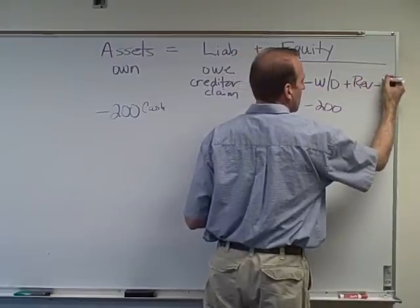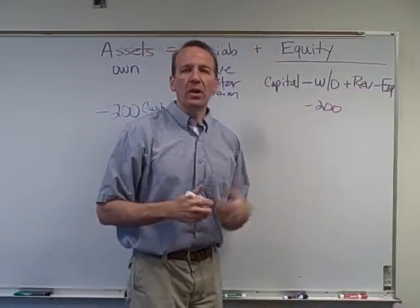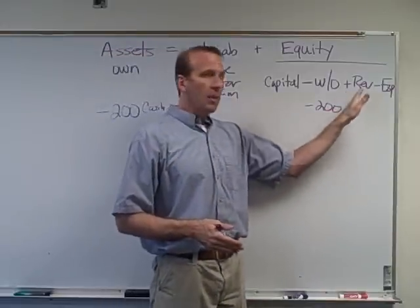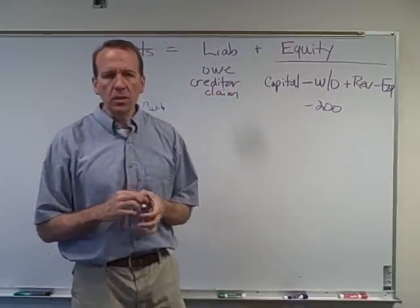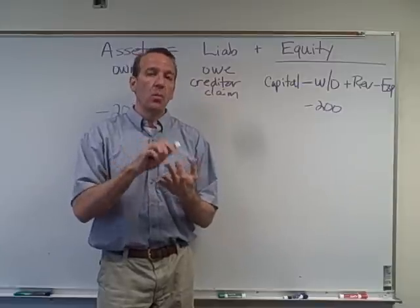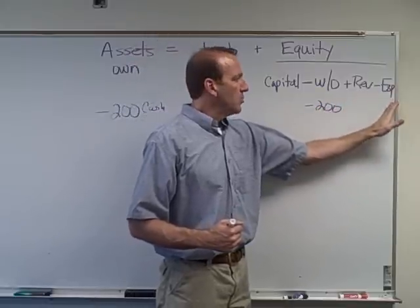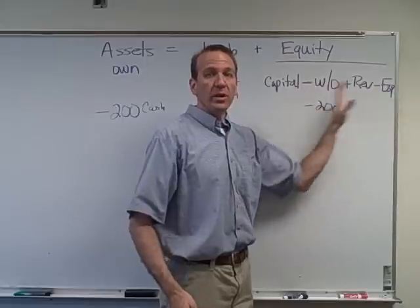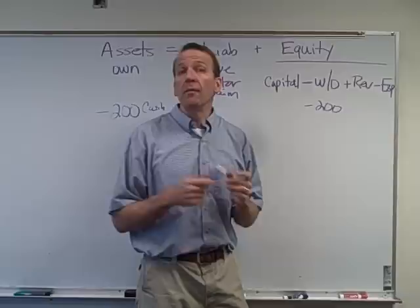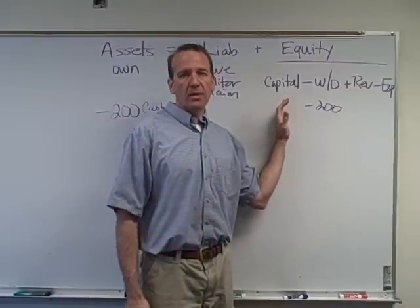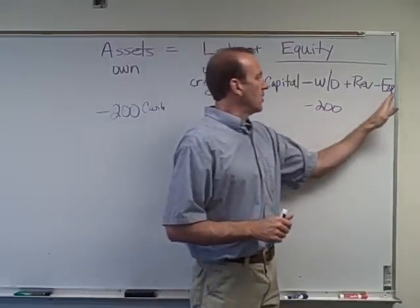The third component is revenue, which increases equity, and the fourth is expenses, which decrease equity. Revenue is the money we earn from our business — in our case, selling pizza, salads, and wings. Expenses are things we pay out: gas for the car, utilities, wages to employees. These reduce the profit of the business. Revenues increase our profit; expenses decrease our profit.